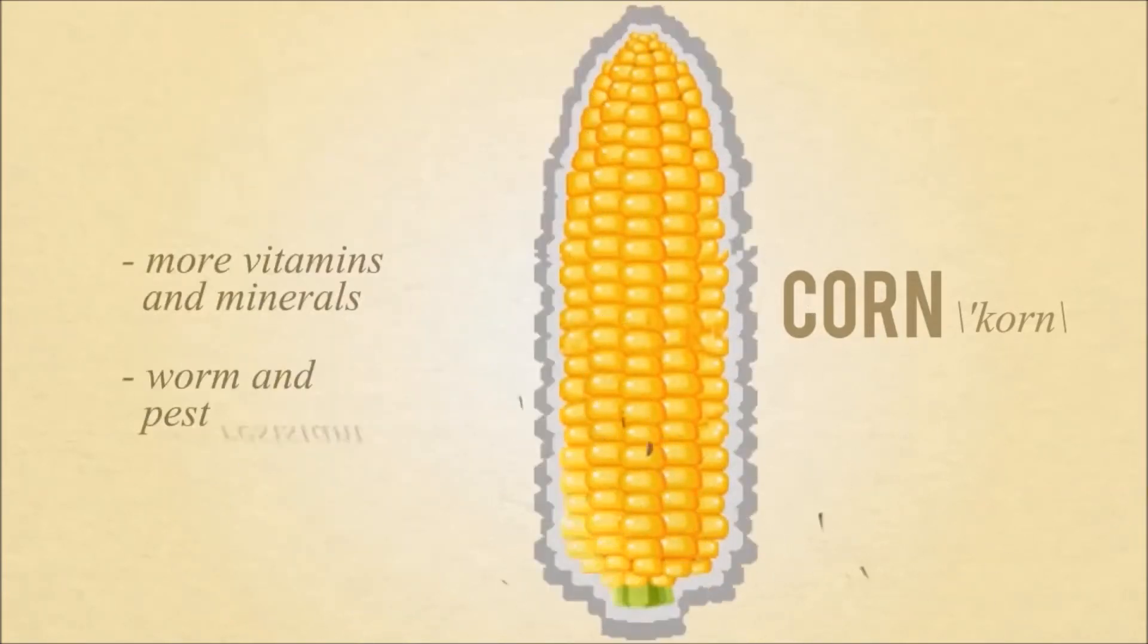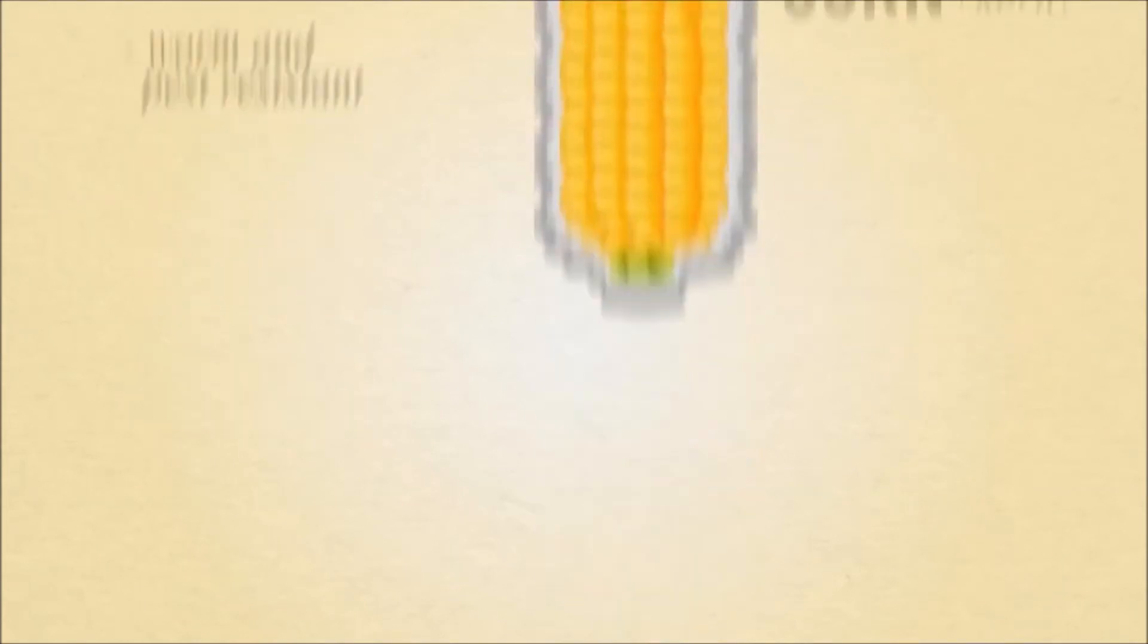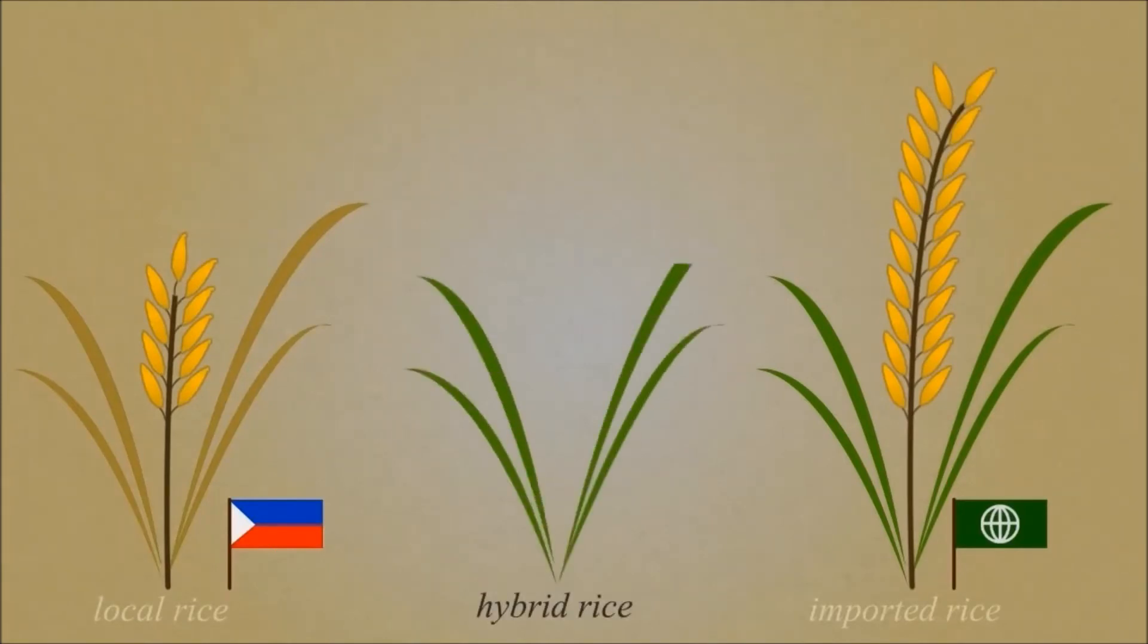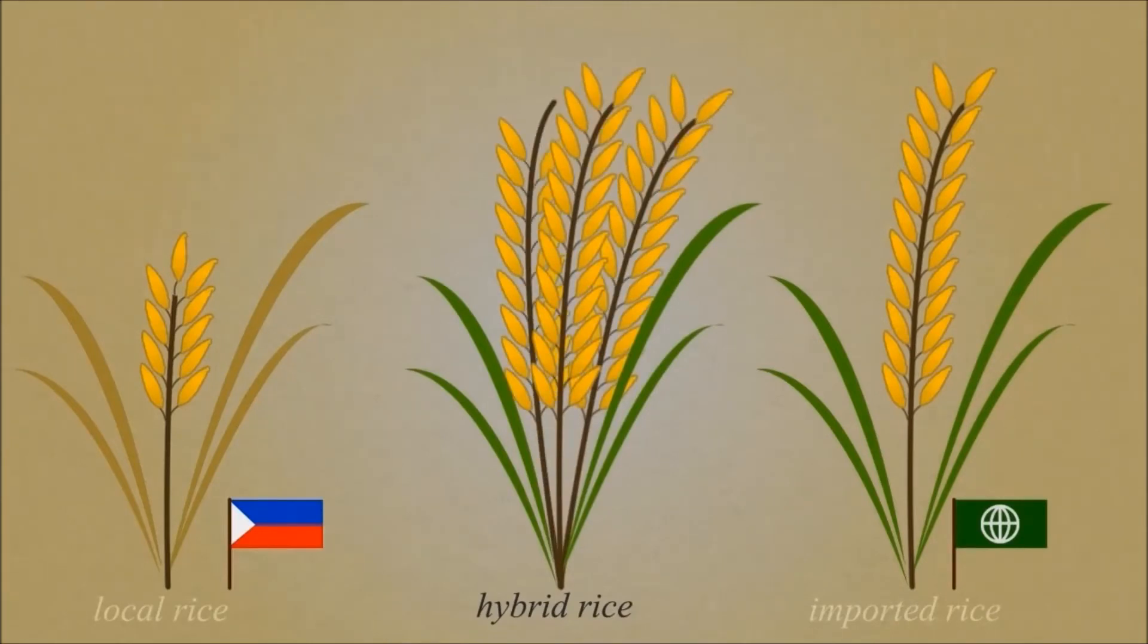By manipulating these building blocks in another way, we can copy traits of an imported rice that has high threshold in water, then combine it with the local rice so that it can survive in the country.